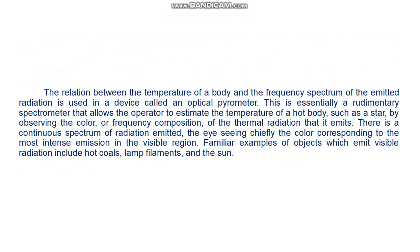That is, with increasing temperature, the body emits more thermal radiation and the frequency of the most intense radiation becomes higher. The relation between the temperature of a body and the frequency of the emitted radiation is used in a device called an optical pyrometer. This is essentially a rudimentary spectrometer that allows the operator to estimate the temperature of a hot body, such as a star, by observing the color or frequency composition of the thermal radiation it emits. Familiar examples of objects which emit visible radiation include hot coals, lamp filaments, and the sun.